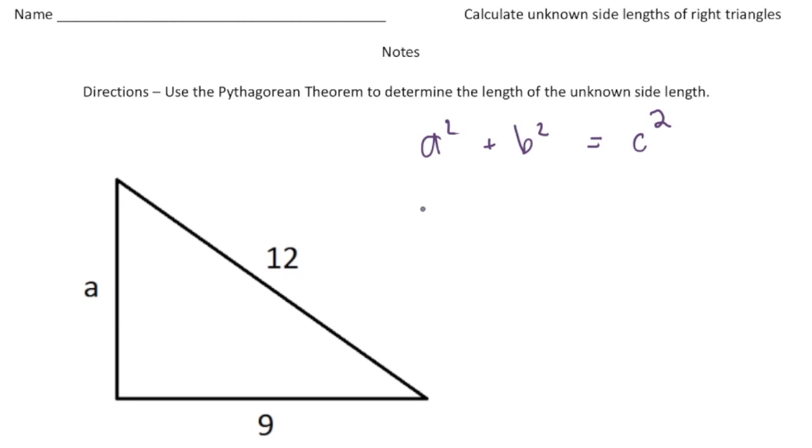So a is the unknown so it's going to be a squared plus now c has to be 12 because that's the longest side. So 12 squared is going to be over here and that's going to equal b squared which is going to be 9 squared over here.